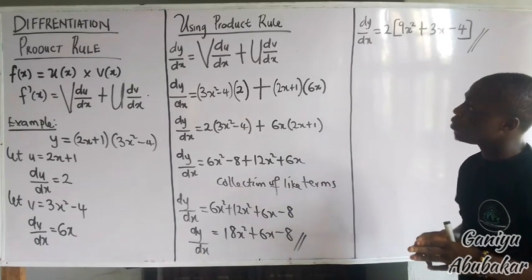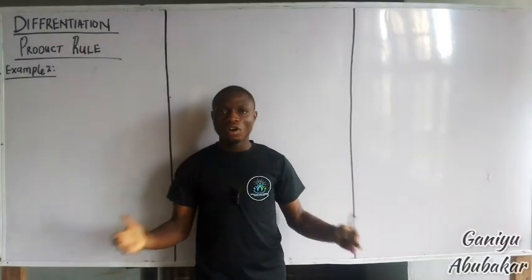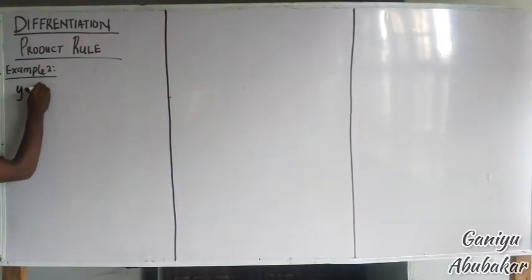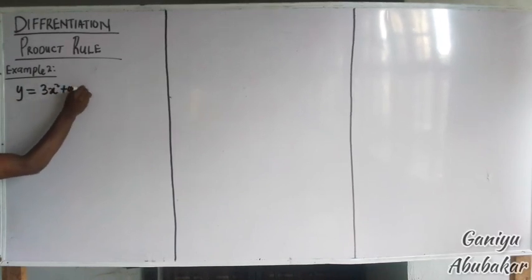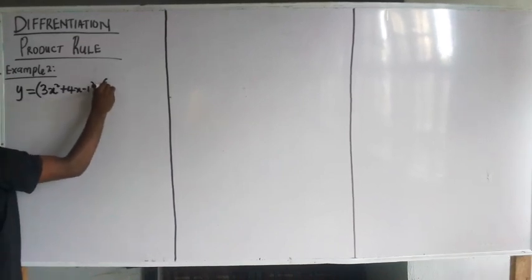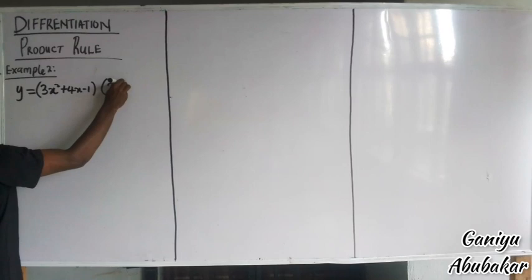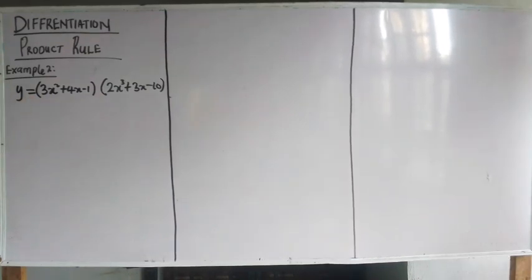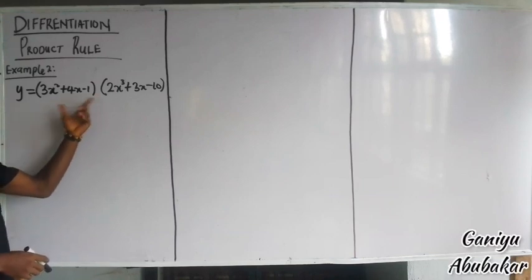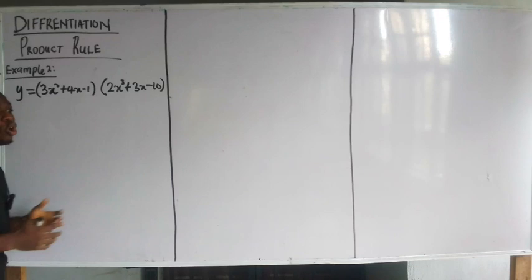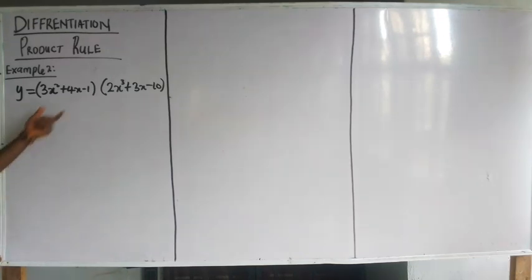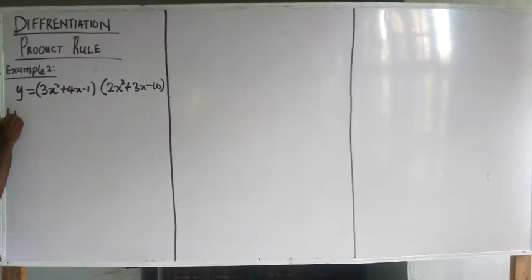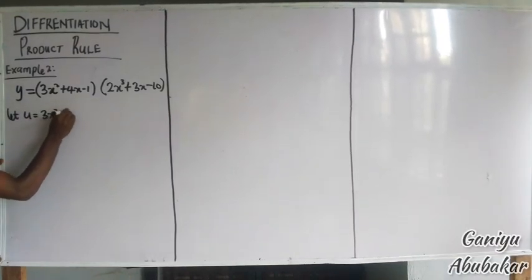Let's take one more example. If I have y equal to (3x² + 4x − 1) all into (2x³ + 3x − 10), obviously I will apply the Product Rule because these two things are multiplying each other. Let u equal to 3x² + 4x − 1 and let v equal to 2x³ + 3x − 10.